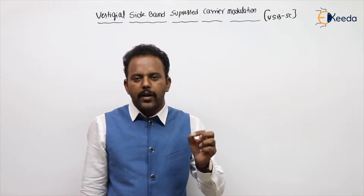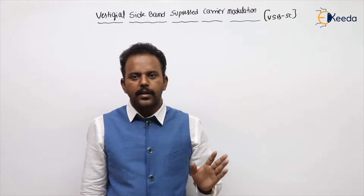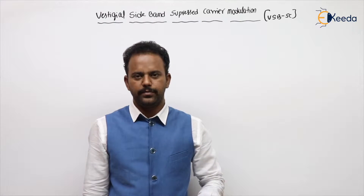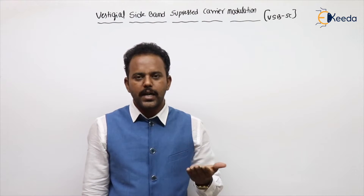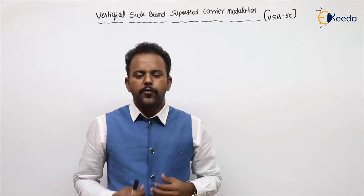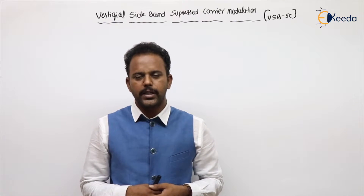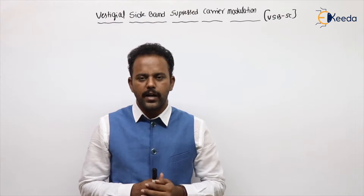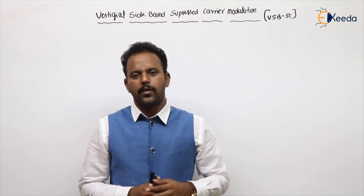What is the bandwidth of each TV channel? In India, the bandwidth is 7 MHz. In US standards, it is 6 MHz. If you see the Simon Haykin textbook — Communication Systems by Simon Haykin — he gives 6 MHz because he follows North American standards.